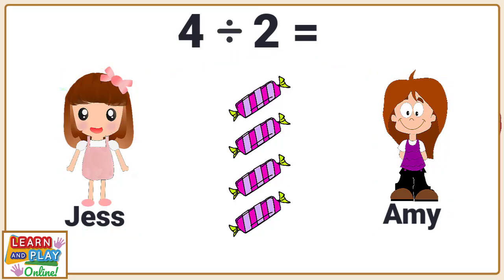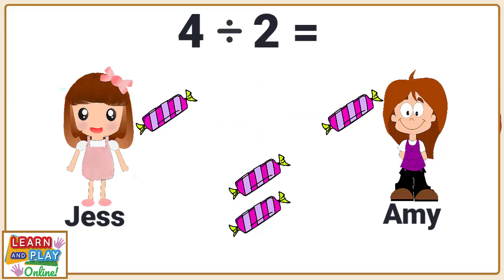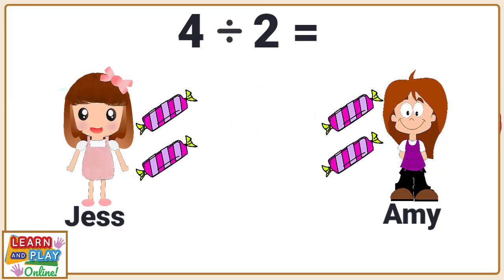In order to solve the problem four divided by two, we now have to share the candies between Jess and Amy to see how many candies the girls get each. Both Jess and Amy now have two candies each. So the answer to four divided by two is two.